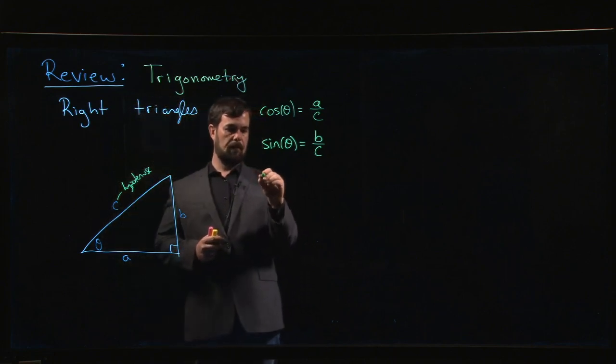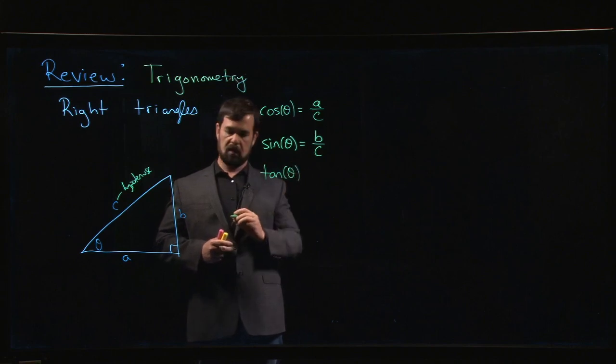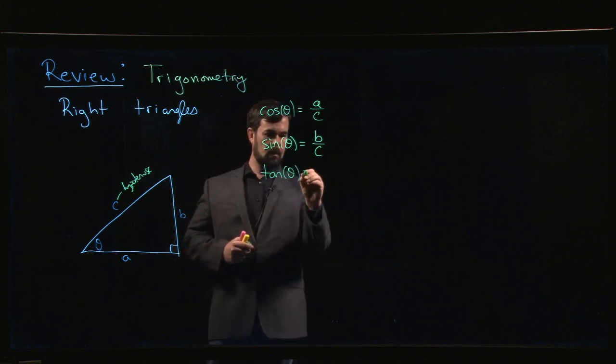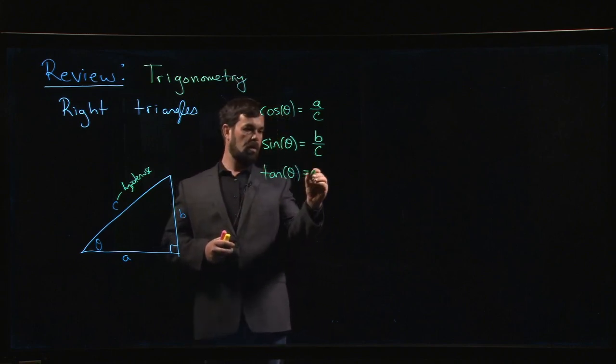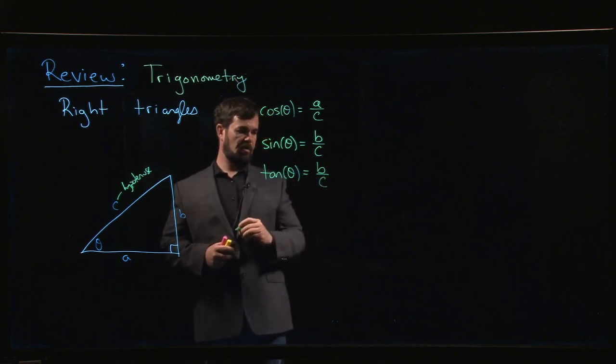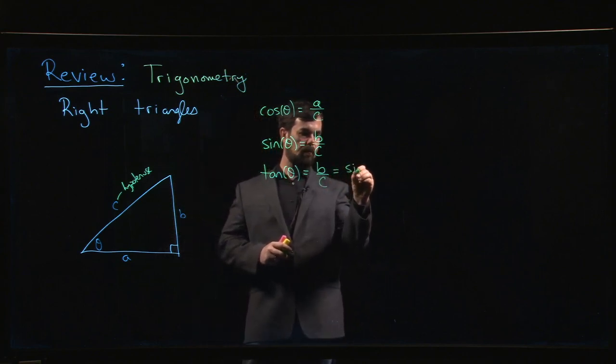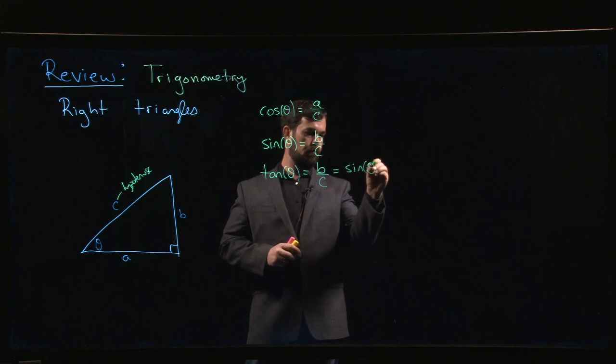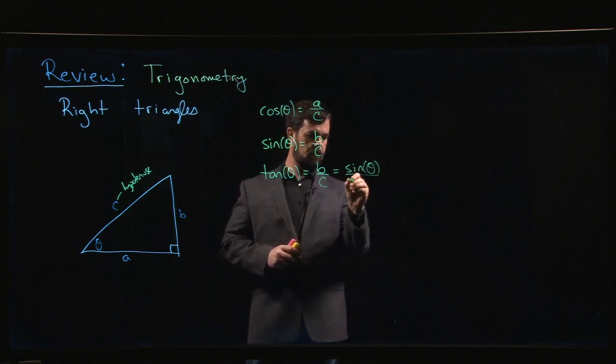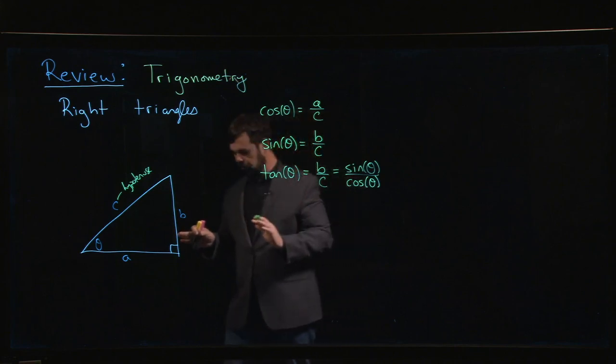And there's also tangent, tan theta. And tan theta is the ratio of the opposite side over the adjacent side. And one of the things that you'll notice is that it's the same as doing sine theta divided by cos theta. Those are the three basic trigonometric functions.